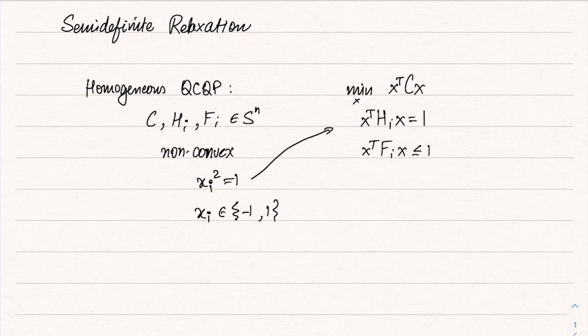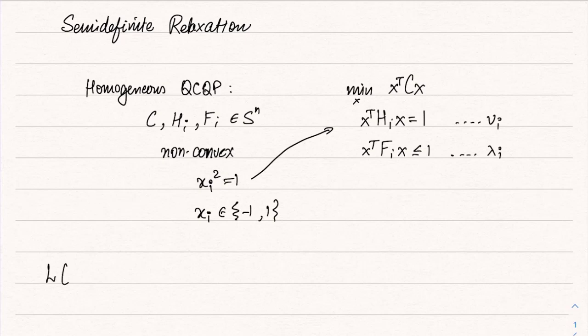This is a really difficult non-convex problem and our goal is to generate some approximate solution. Semi-definite relaxation allows us to do that. First, we will find the dual of this problem. To this end, let us associate dual variables ν_i with the equality constraints and λ_i with the inequality constraints. Then the Lagrangian, as a function of x, λ, and ν, will be written as x^T C x plus...